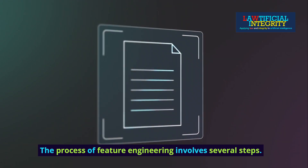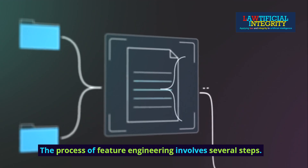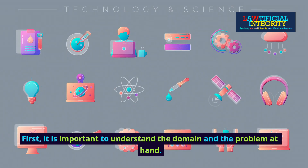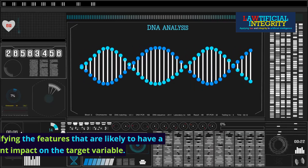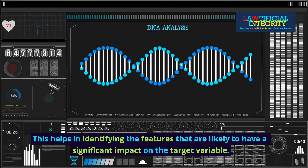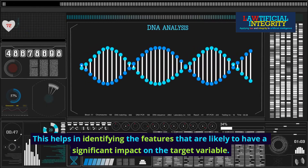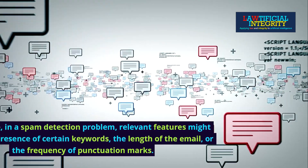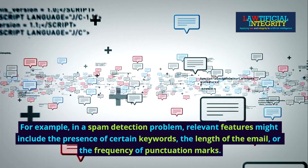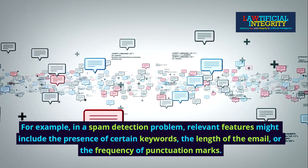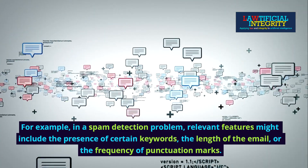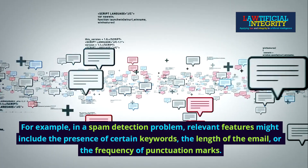The process of feature engineering involves several steps. First, it is important to understand the domain and the problem at hand. This helps in identifying the features that are likely to have a significant impact on the target variable. For example, in a spam detection problem, relevant features might include the presence of certain keywords, the length of the email, or the frequency of punctuation marks.